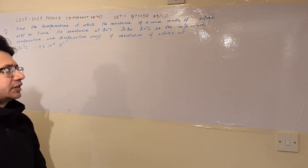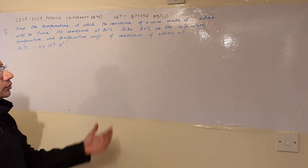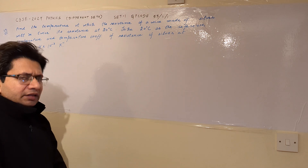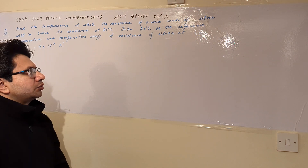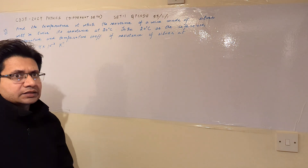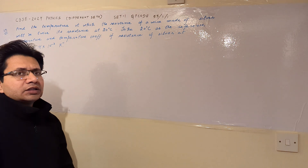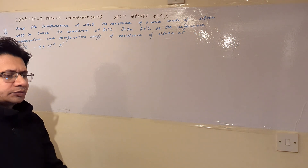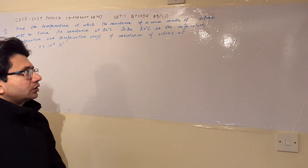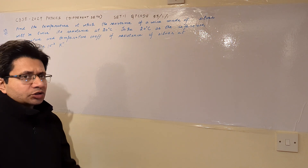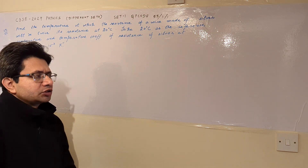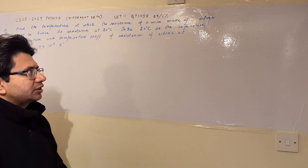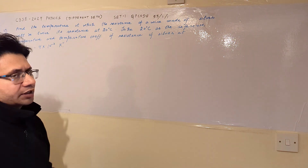This problem is based on the concept that resistance changes with temperature. For metals, resistance generally increases when temperature rises — these elements follow a positive temperature coefficient of resistance, meaning resistance increases as temperature increases.